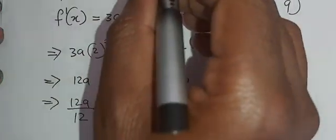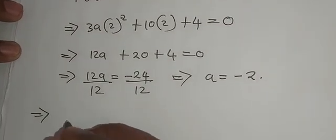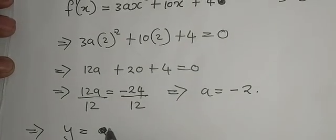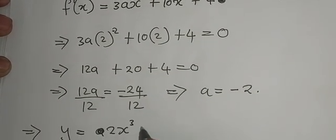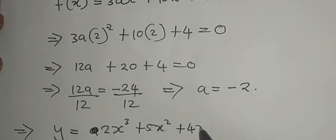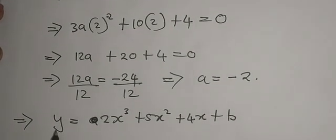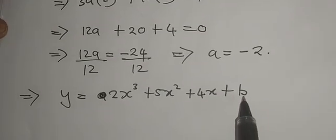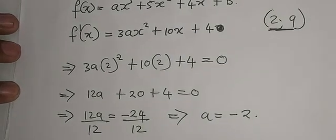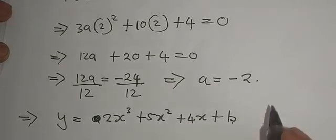So immediately we find our a, we substitute it into the original, which means it will now be equal to y = -2x³ + 5x² + 4x + b. Now, all we need to find is b, but look here, we are told that (2,9) is the turning point. Besides being a turning point, it's also a point on the graph.